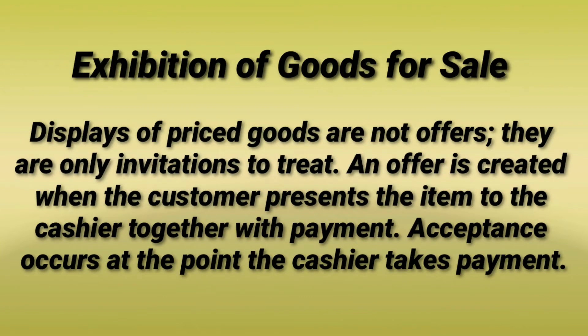Type number three: exhibition of goods for sale. Displays of priced goods are not offers — they are only invitations to treat. An offer is created when the customer presents the item to the cashier together with payment. Acceptance occurs at the point the cashier takes payment. So displays of priced goods are invitations to treat; the offer is made when the customer presents the goods and the cashier accepts payment.